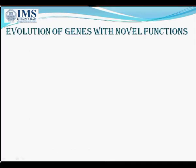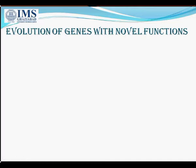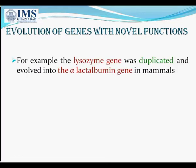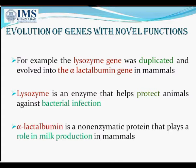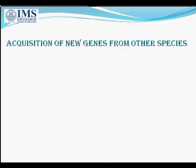Now, the evolution of genes with novel functions. Here we will take the example of the lysozyme gene. This lysozyme gene was duplicated and evolved into the alpha-lactalbumin gene in mammals. Lysozyme is an enzyme which helps to protect animals against bacterial infection, and alpha-lactalbumin is a non-enzymatic protein that plays a role in milk production in mammals. This illustrates a conversion of lysozyme to alpha-lactalbumin.